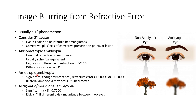In ametropic amblyopia there is significant though symmetrical refractive error greater than +5 diopter spherical or -10 diopter spherical. Bilateral amblyopia can occur if such refractive errors are uncorrected.